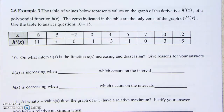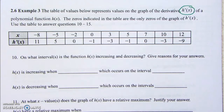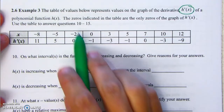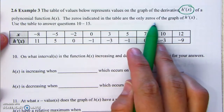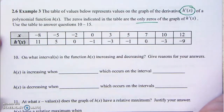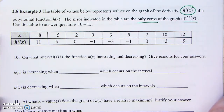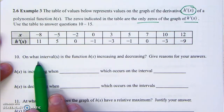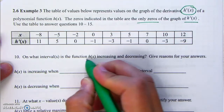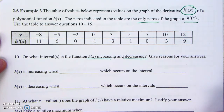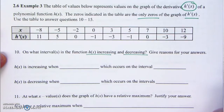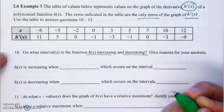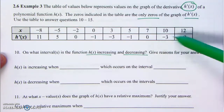Example 3. The table of values below represents values of the graph of the derivative — be careful, it's the derivative, not the original function. The zeros indicated in the table are the only zeros of the graph of the derivative.